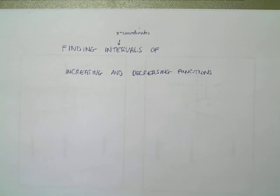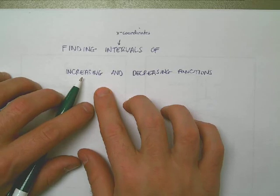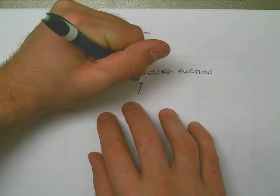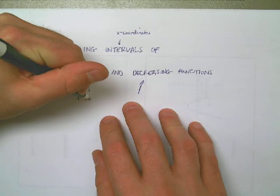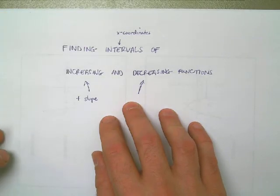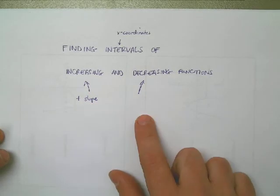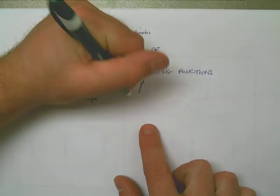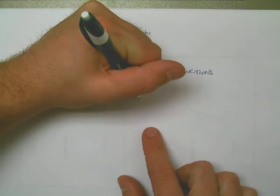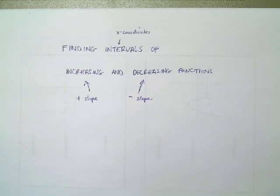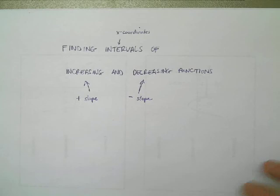The other thing we're talking about is increasing and decreasing functions, and we're going to see that that really refers to the slope. This is going to be areas where we have a positive slope — x-coordinates that have a positive slope — and then if a graph is going downward, maybe where they have a negative slope. We need to find the x-coordinates where a graph might be going up and the x-coordinates where it might be going down.